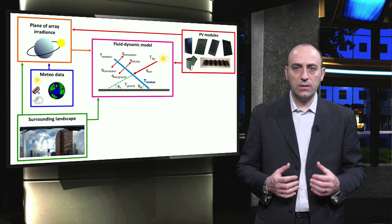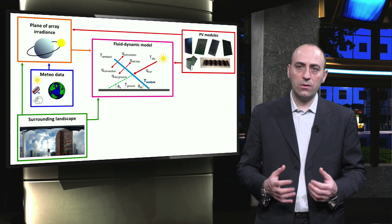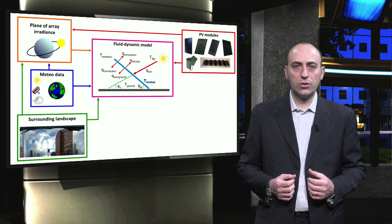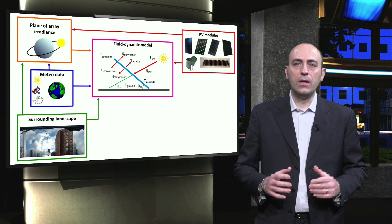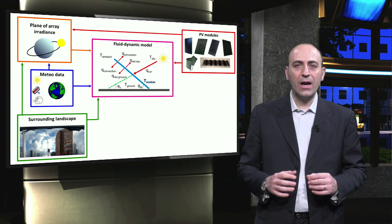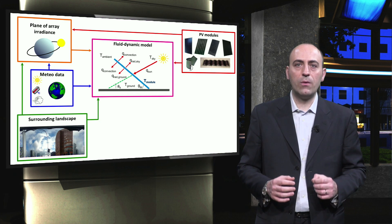the irradiance incident on the module, and the meteorological data such as the wind speed and the ambient temperature. At this point in the PV system design we can accurately predict the DC power output of the modules.